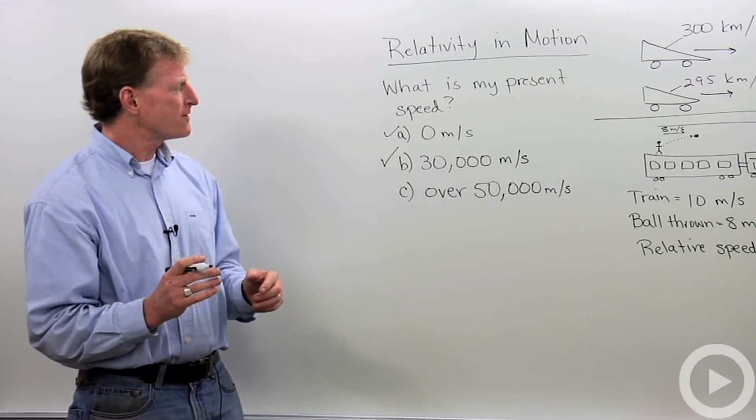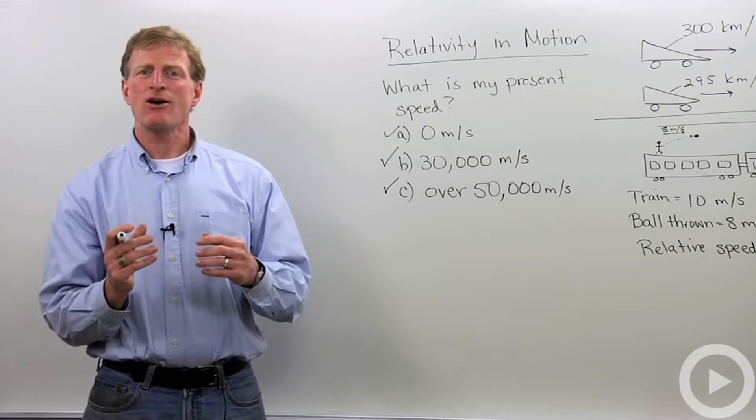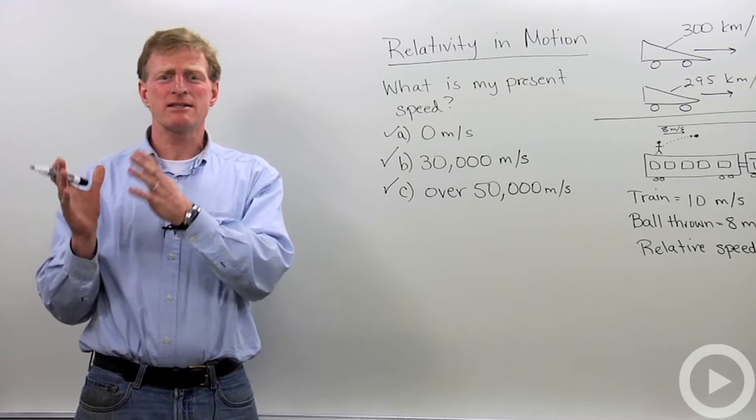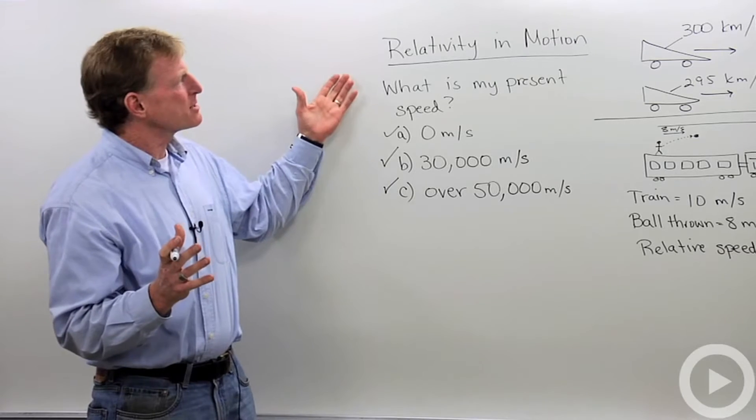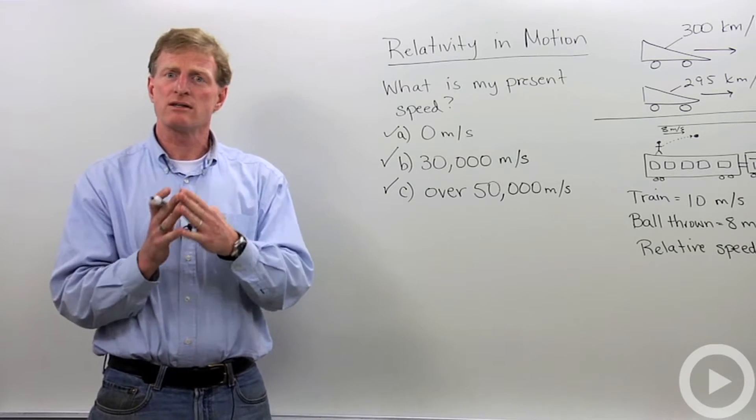If you said over 50,000 meters per second, that is also correct. That is our estimated speed. People don't even really know the actual value, but that is the distance that we are moving away from the center of the universe. So my speed is relative, depending on what we're talking about and what we're relative to.